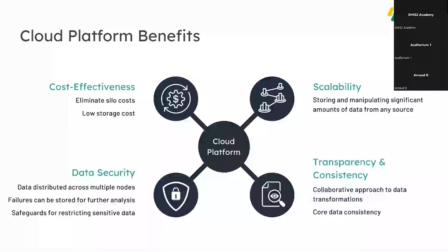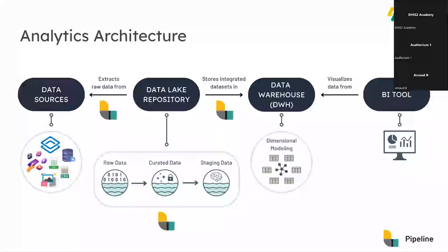What does this architecture look like? First, raw data is extracted from data sources through a pipeline into the data lake repository. The data lake repository has three data lakes — best practice for this infrastructure. The first is a raw data lake with data in its original format. Then a curated data lake where data has undergone transformations and sensitive information and PII can be removed. Finally, a staging data lake — an analytics sandbox where data scientists can perform deep data analysis. Those integrated data sets are then stored in a data warehouse.